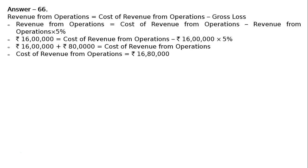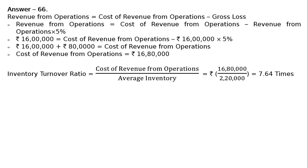This is the cost of revenue from operations we obtained, which is Rs. 16 lakh 80,000. We are supposed to calculate stock turnover ratio, and average inventory is given. Stock turnover ratio equals cost of revenue from operations divided by average inventory. Cost of revenue from operations is Rs. 16 lakh 80,000, and average inventory given in the question is Rs. 2 lakh 20,000.